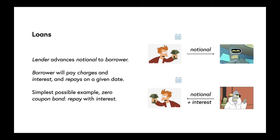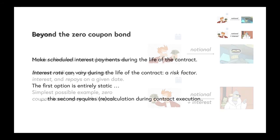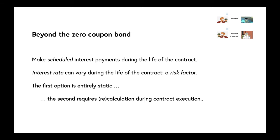We're talking about crypto loans. What happens in a loan is that a lender advances a notional amount to a borrower and the borrower will pay some charges, perhaps some interest and make a repayment on a given date. The simplest possible example is a zero coupon bond where the borrower pays back the notional plus interest to the lender.